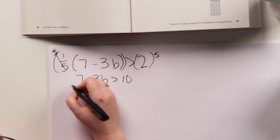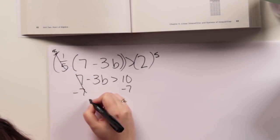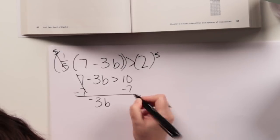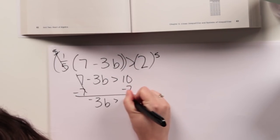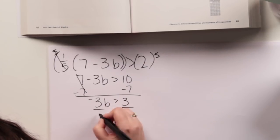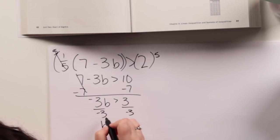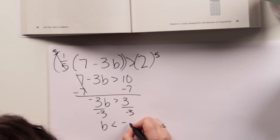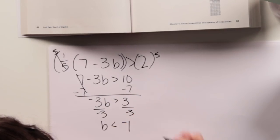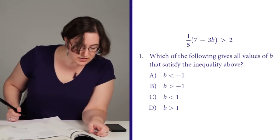So seven minus three B is greater than ten, and then I subtract seven on both sides, giving me negative three B is greater than three, and then I need to divide by negative three. And B, now since I divided by negative, I need to flip my inequality sign so that becomes less than negative one, which is answer choice A.